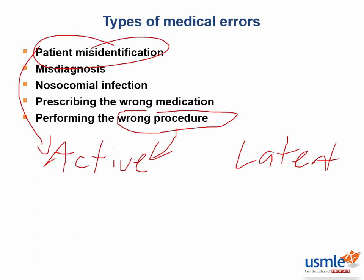Latent errors occur due to faulty processes or organizational structure within the hospital system rather than specific physician errors. An example of this could be a nosocomial infection.